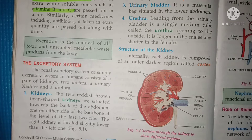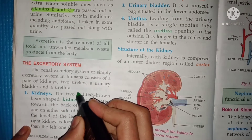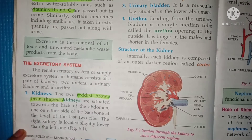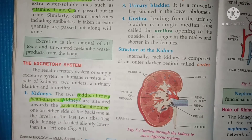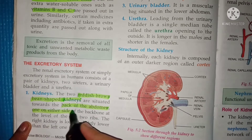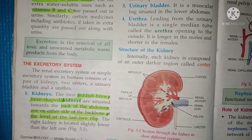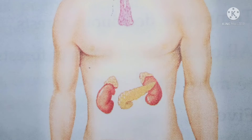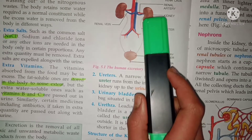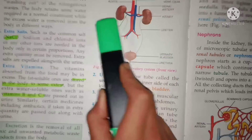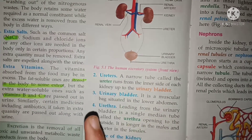So the first key point about kidneys: they are reddish-brown and bean-shaped — that is their structure, shape, and color. They are located at the back of the abdomen, one on either side of the backbone. The right kidney is slightly located lower than the left one.